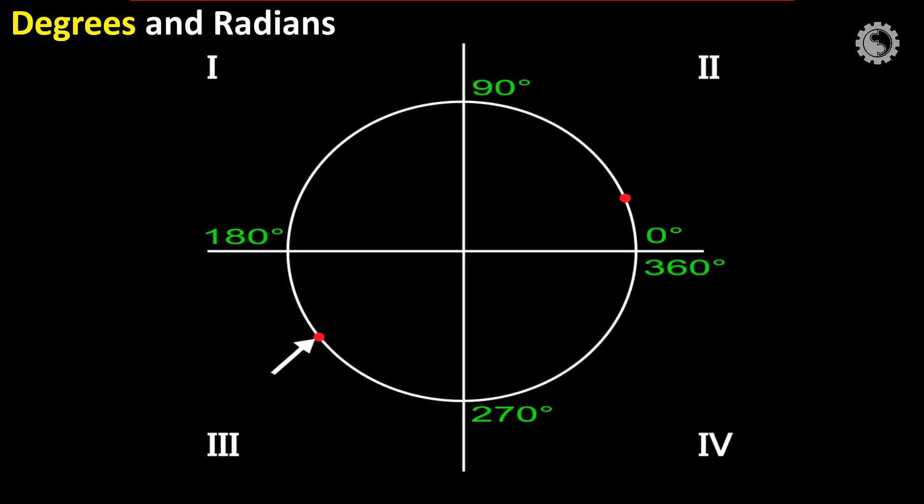For example, consider any point on the circle, that is 180 degrees plus 40.5 degrees equals 220.5 degrees on the circle. The 0, 90, 180, 270, and 360 degrees are common for all.